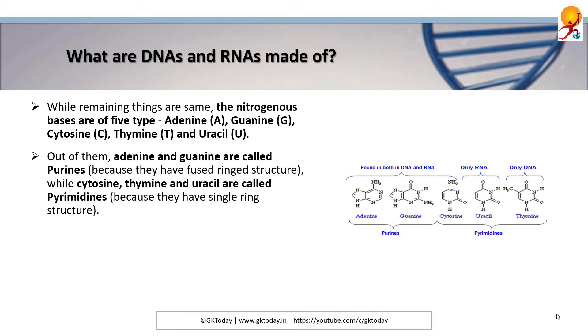Out of them, adenine and guanine are called purines because they have fused ring structure, while cytosine, thymine, and uracil are called pyrimidines because they have single ring structure. While both DNA and RNA consist of adenine, guanine, and cytosine, thymine is only found in DNA and uracil in RNA.